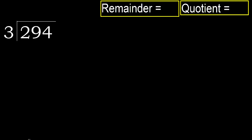294 divided by 3. 2 is less, therefore next. 29 is not less, therefore work with 29.